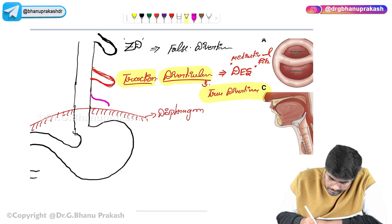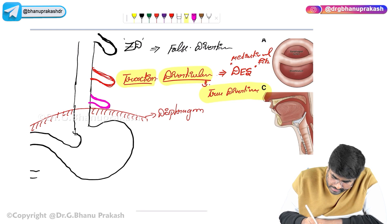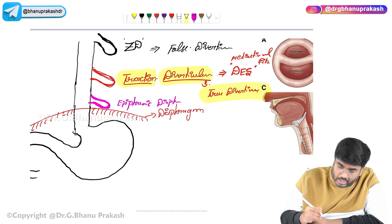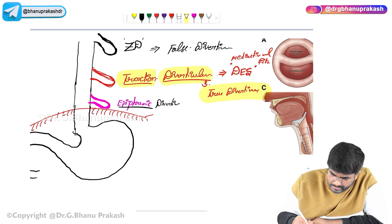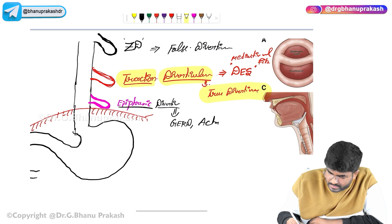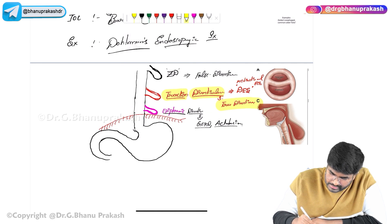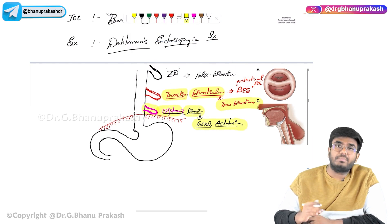One more diverticulum — the last one — occurs just above the diaphragm. This is called the epiphrenic diverticulum. 'Phrenic' refers to the diaphragm. The epiphrenic diverticulum is associated with gastroesophageal reflux disease (GERD) as well as achalasia cardia. As a complication of GERD and achalasia cardia, the person can develop an epiphrenic diverticulum just above the esophagus.